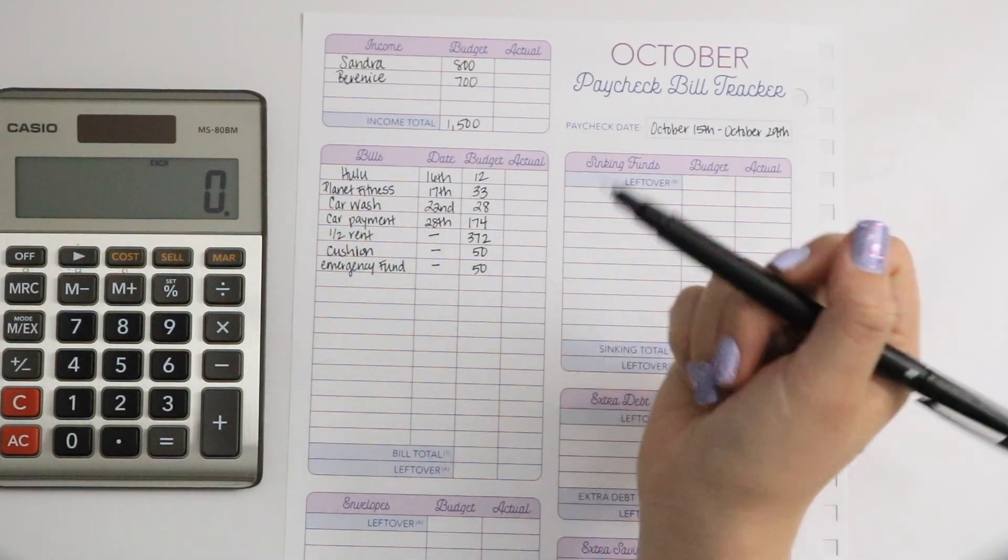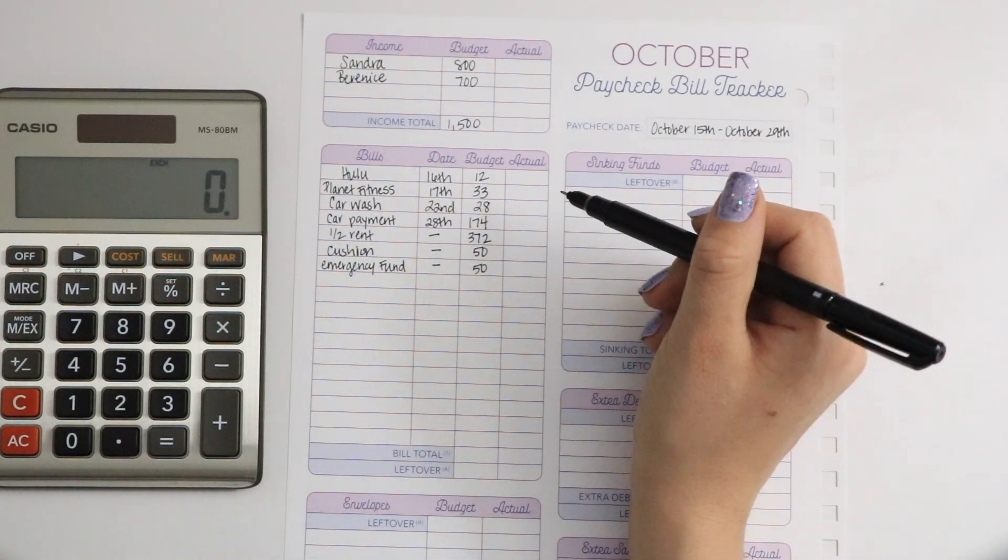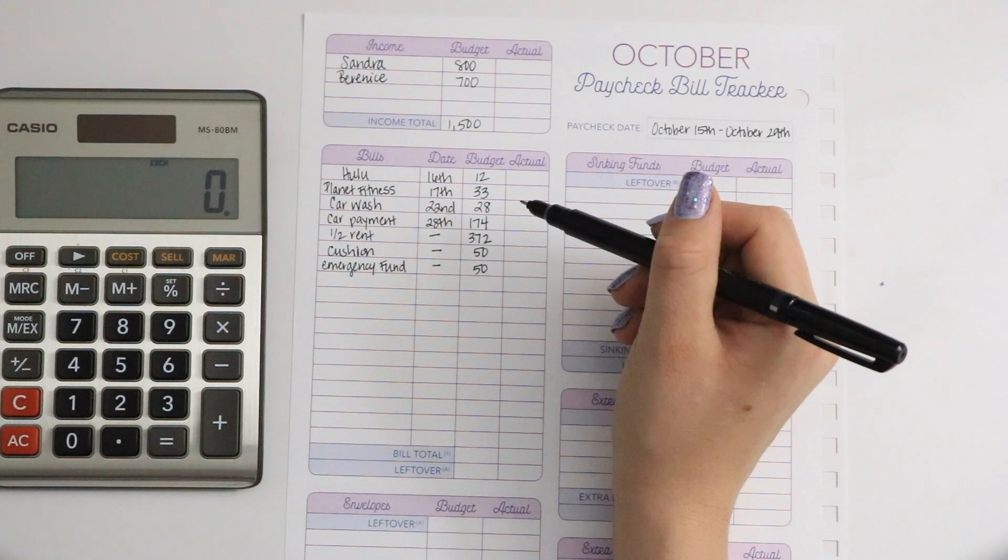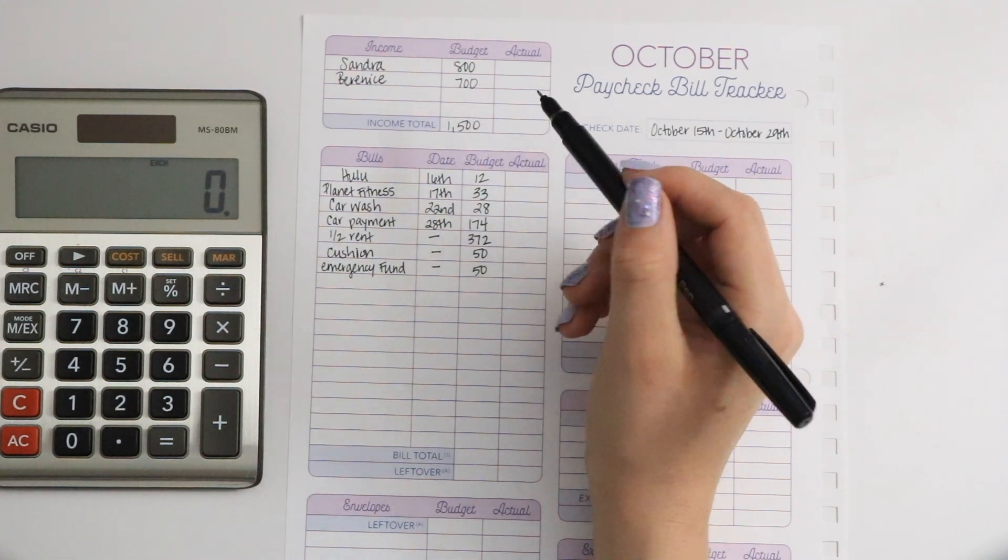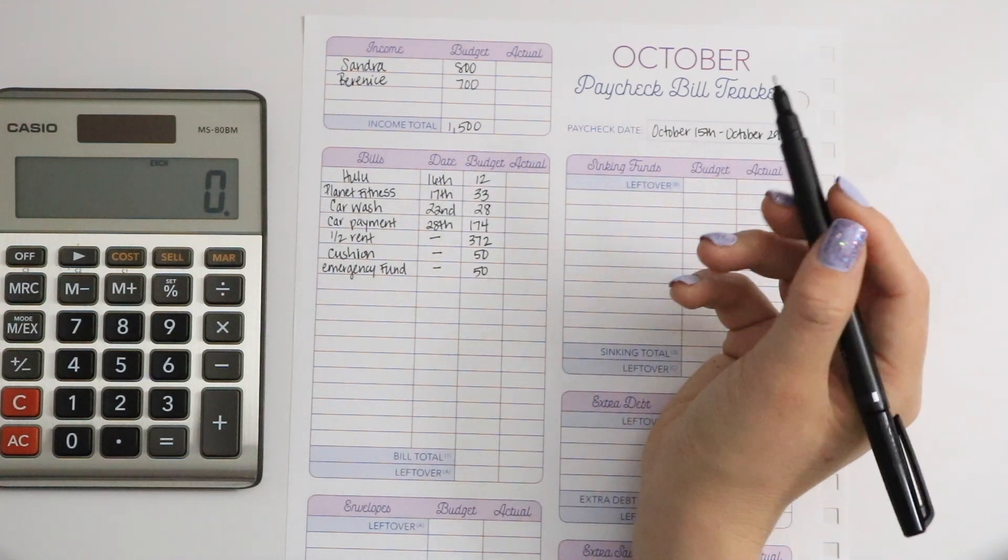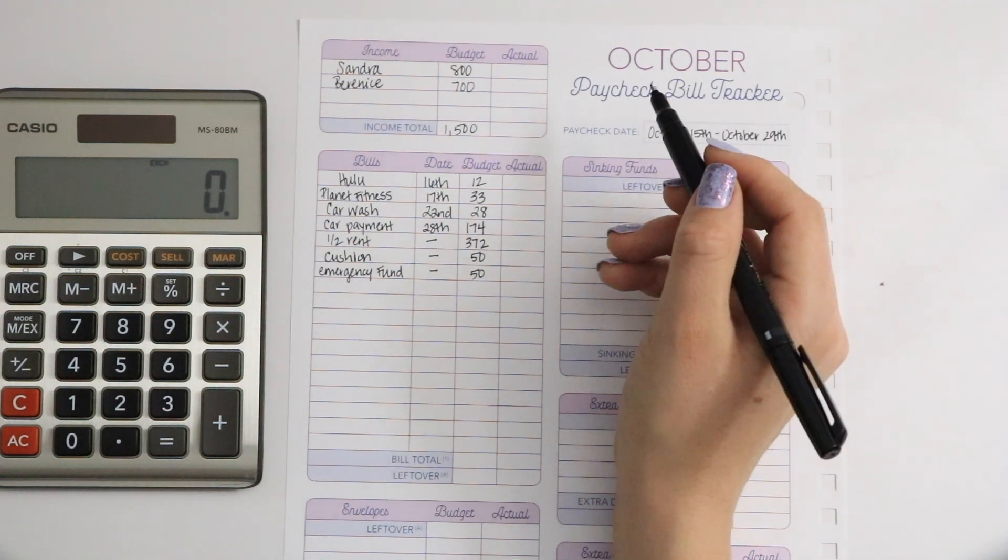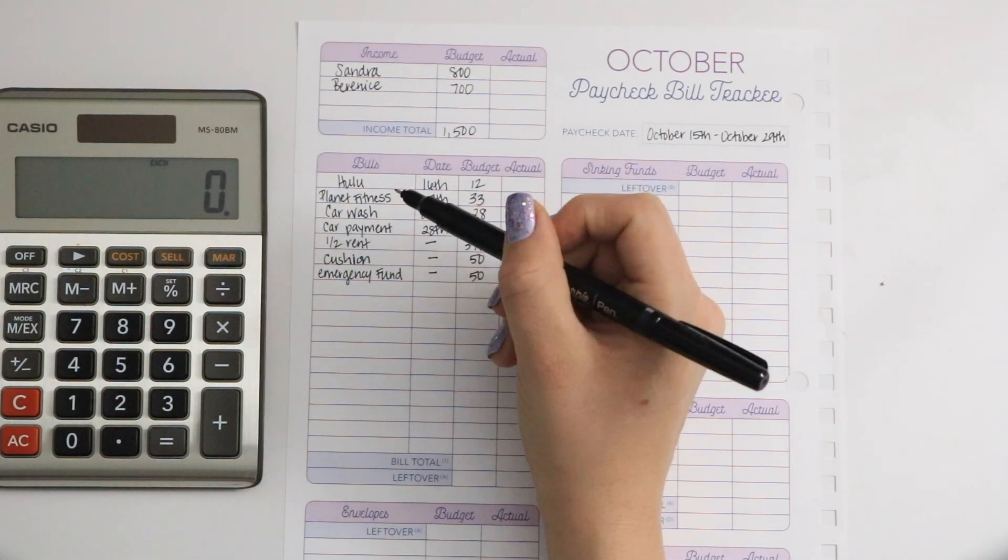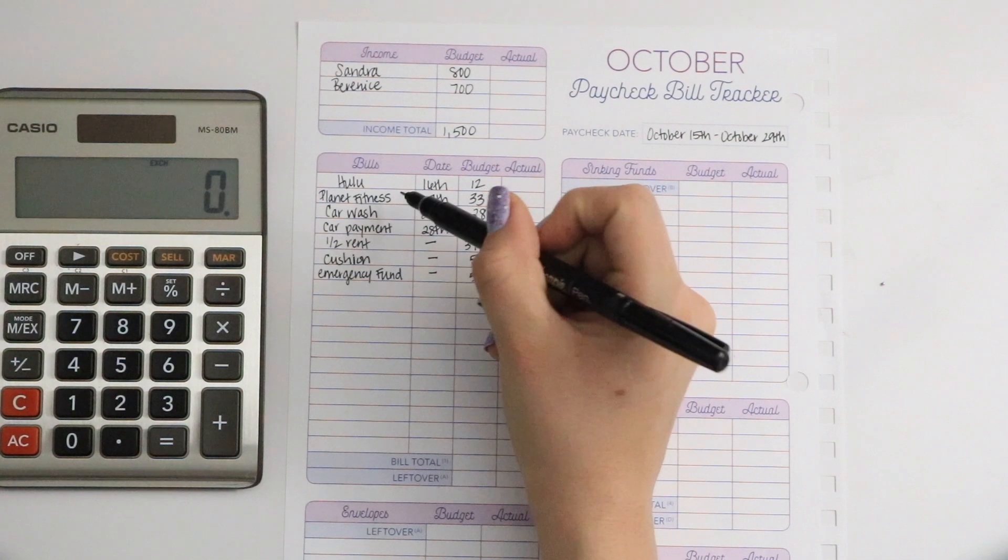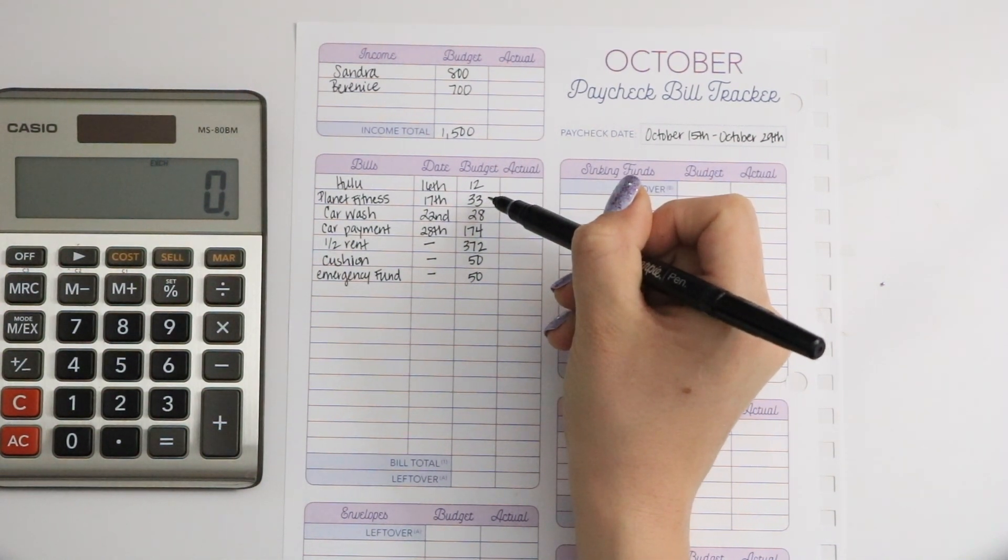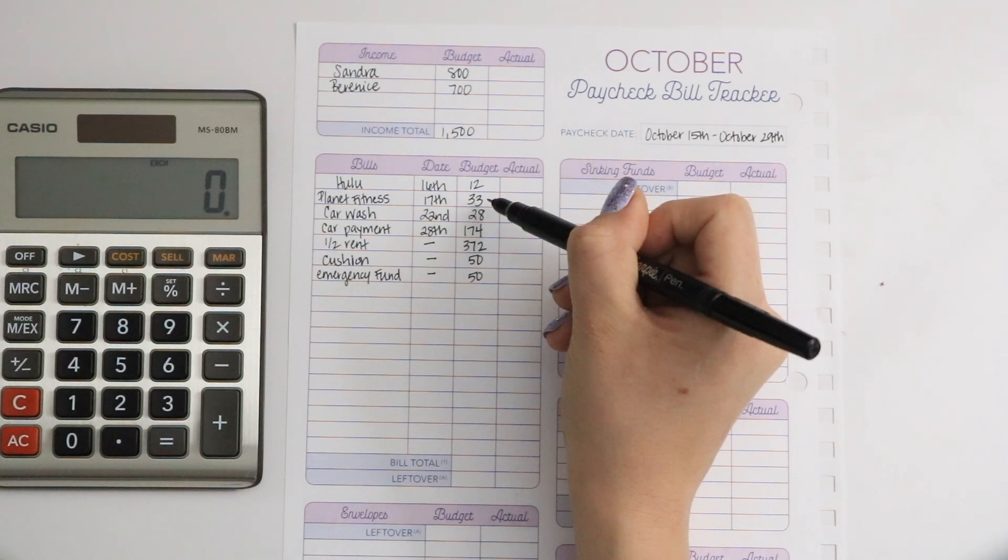Because of the extra money we're going to pay towards rent and the one-time fee of $700, we are going to be canceling the Planet Fitness. We haven't gone since it opened, I think October 1st, and we're just going to cancel that so that saves us $33 per month plus a one-time yearly fee of I think like almost $80.